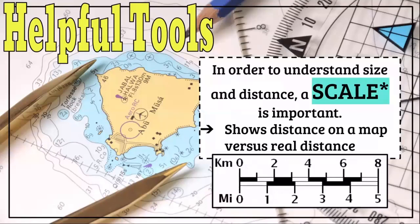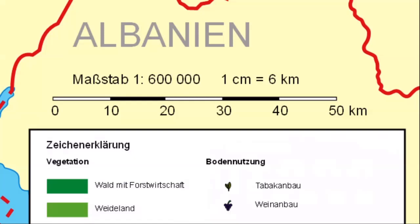Another helpful tool is a scale. In order to understand size, you need to understand scale. This shows distance on a map versus real distance. If I'm walking somewhere and I look at a map on my phone, I want to use the scale to determine how many blocks it is and how long it will take. Since we have to shrink maps, depending on how we shrink them, it's going to reveal the distance on the map versus the real distance.